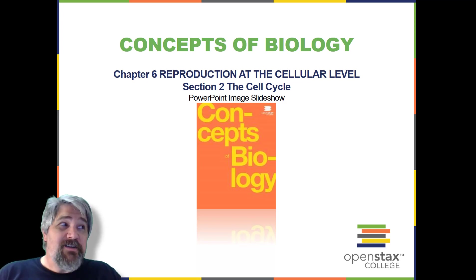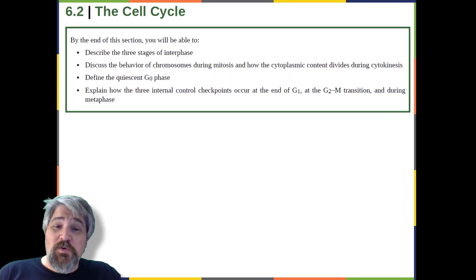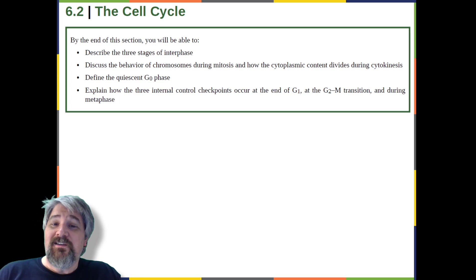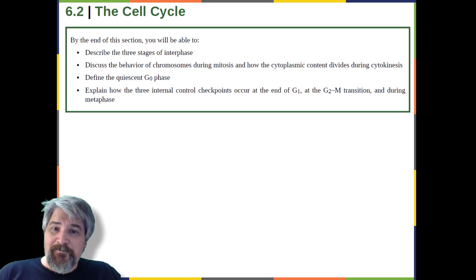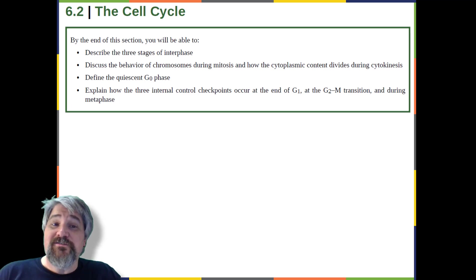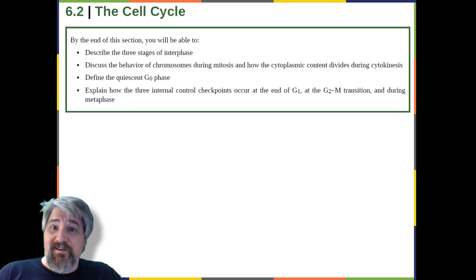Welcome back to Chapter 6, Section 2: The Cell Cycle. By the end of this section, you will be able to describe the three stages of interphase, discuss the behavior of chromosomes during mitosis and how the cytoplasmic content divides during cytokinesis, define the quiescent G0 phase, and explain how the three internal control checkpoints occur at the end of G1, at the G2 to M transition, and during metaphase.